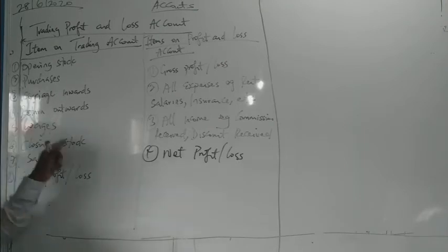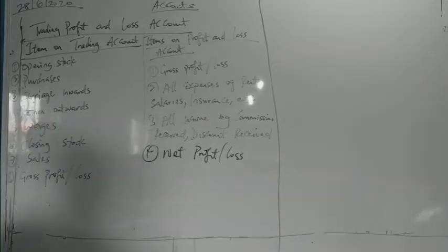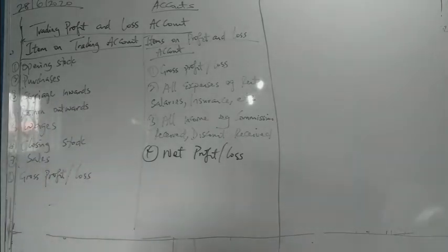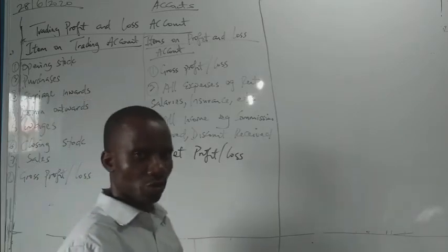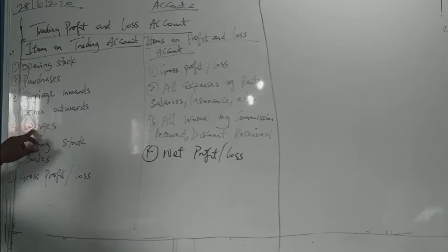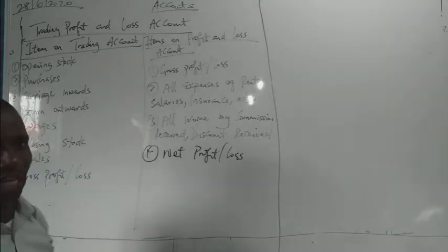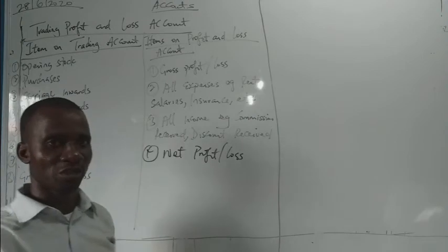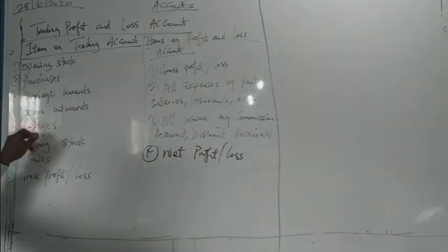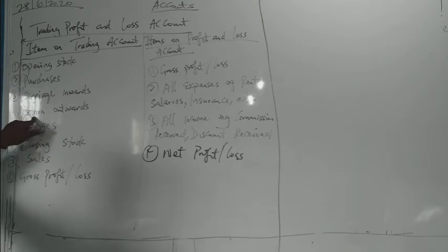There are also direct expenses such as wages. People producing goods directly — maybe factory workers — the money you pay them is directly related to production. For example, if they produce 100 units, you pay them a set rate per unit. That is wages, and it is directly related to the stock. So you add it here as a direct expense.